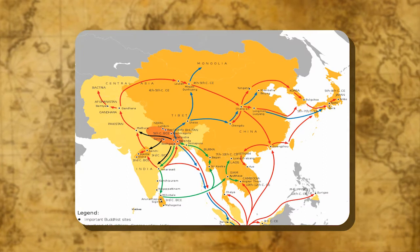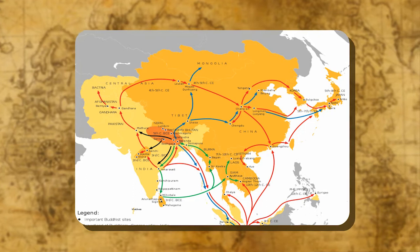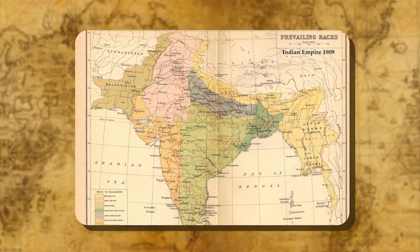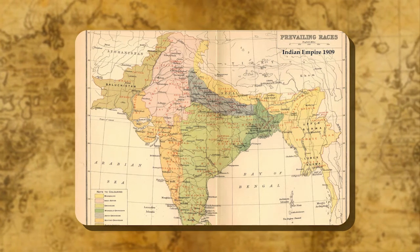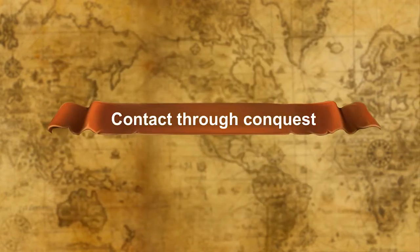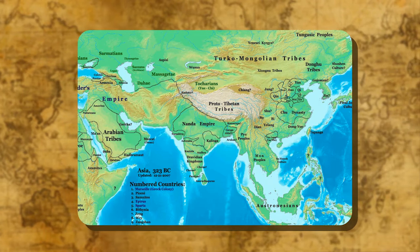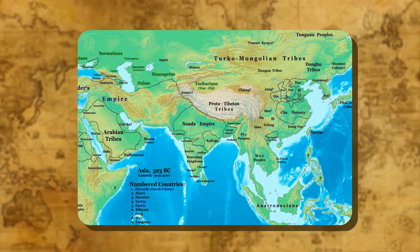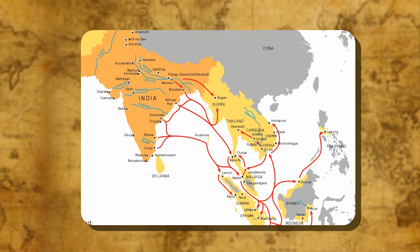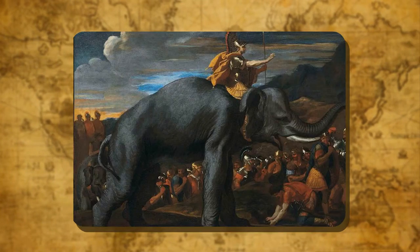Interaction through religion involved the spread of Buddhism from India to Central Asia, East Asia, and Southeast Asia. Interaction through migration included the migration of the Aryans into India and the far-reaching impact it had on Indian society and culture. Contact through conquest involved the conquest of North-West India by tribes from Central Asia like the Shakas and the Kushanas, and the Tamil conquest of Southeast Asia.